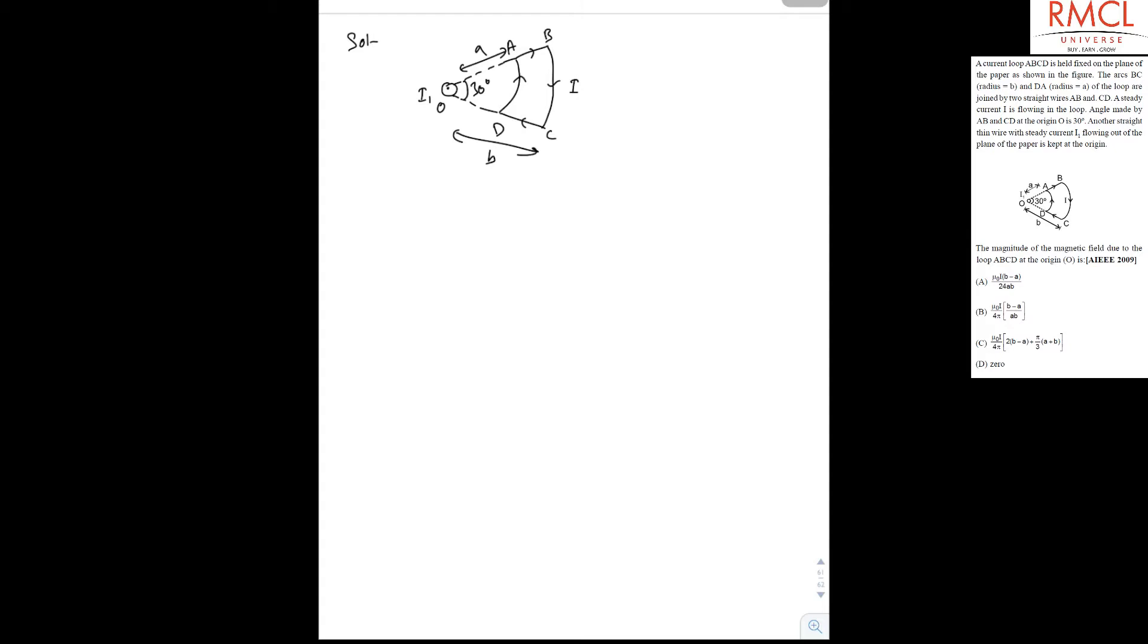So due to this arc AD, it will be mu0 upon 4 pi, I upon radius A, and the angle is 30 degrees, that is pi by 6.